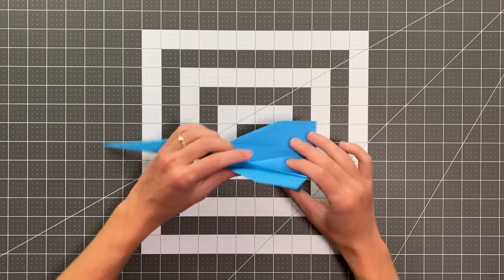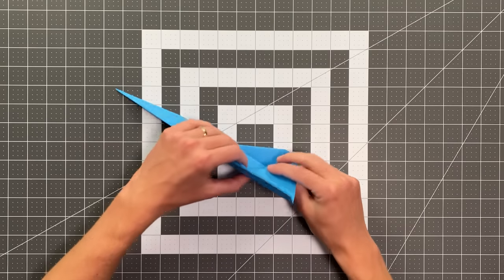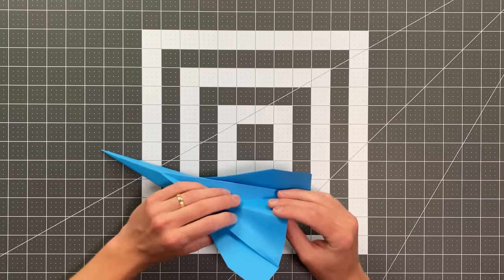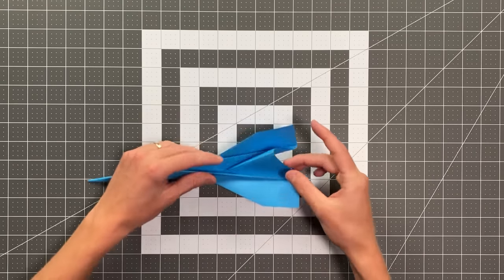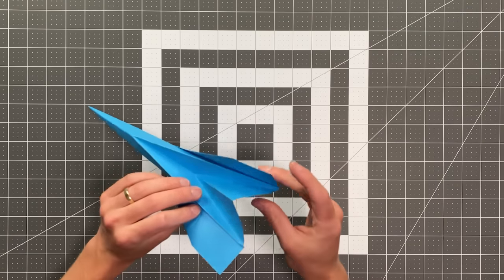And now we can reverse this crease right here and the center crease. Just like that. And make sure we reverse this crease as well. Like that. And that's going to allow us to stand that fin up in the middle.